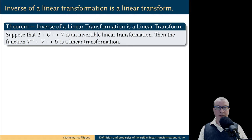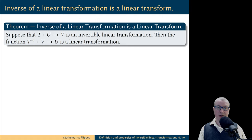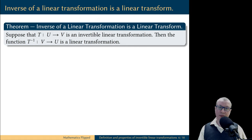Now, let's prove that if a linear transformation has an inverse, then the inverse function is automatically a linear transformation. So, we have an invertible linear transformation t that goes from vector space U to vector space V, and therefore we have an inverse function t inverse that goes from V to U. We will prove that t inverse is also a linear transformation by checking the two defining properties: first, it preserves vector addition, and second, it preserves scalar multiplication.